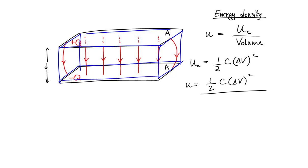We have a rectangular volume, so we write volume equal to the rectangular area A times the distance — the thickness of that region of space. So the volume of this region of space is equal to A times d.